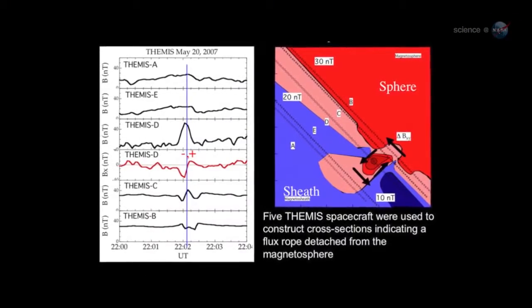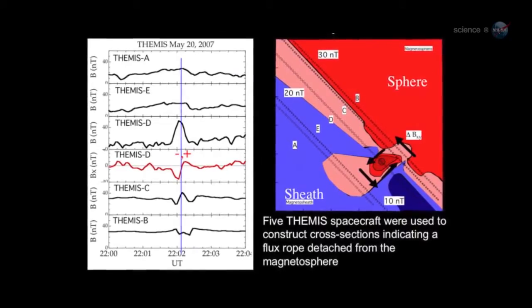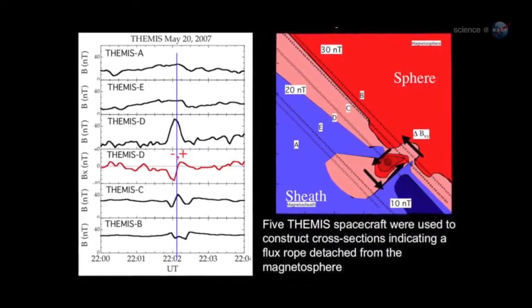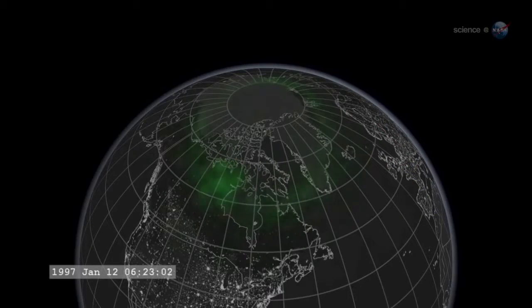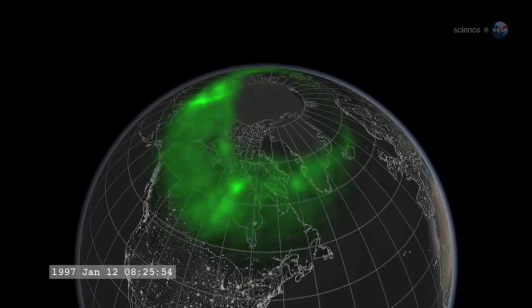Most portals are small and short-lived. Others are yawning, vast, and sustained. Energetic particles can flow through the openings, heating Earth's upper atmosphere, sparking geomagnetic storms, and igniting bright polar auroras.